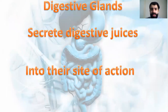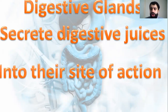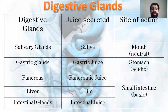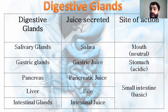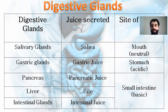What is the function of the digestive glands? Digestive glands secrete digestive juices into their site of action. For example, salivary glands secrete saliva inside the mouth, where the medium is neutral. What does neutral mean? If the pH is equal to what — is it less than or greater than something? Who can tell me what neutral means? Gabriel answers.